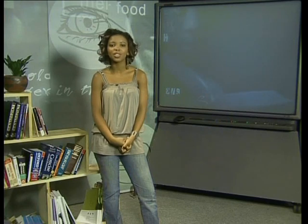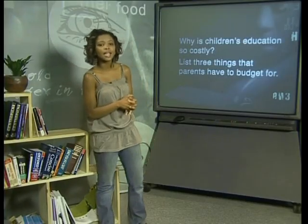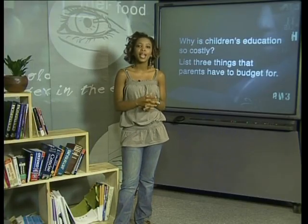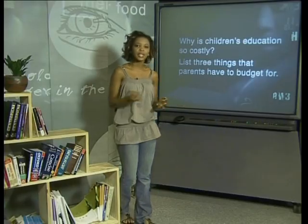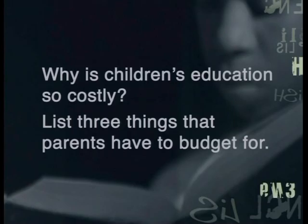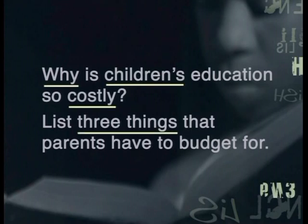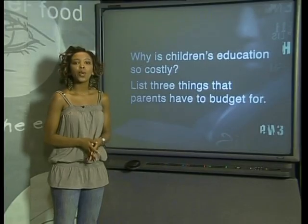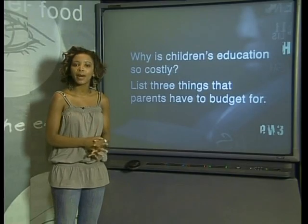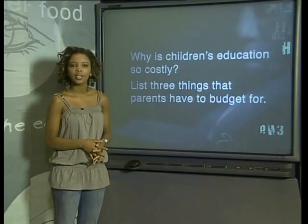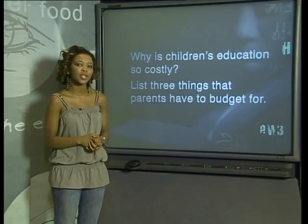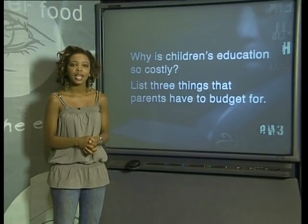Now that we know how to approach a comprehension, let's think about how to go about answering the questions. Remember that you should underline the key words in all the questions. The reason why this is a good idea is that it will make it easier for you to focus on the important points and will ensure that you answer all parts of the question. For example: 'Why is children's education so costly? List three things that parents have to budget for.' Here you would underline 'why', 'children', and 'costly', then 'three things', 'parents', and 'budget'. The underlining will also remind you that there are two parts to this question, so you will have to be sure to answer the whole question.